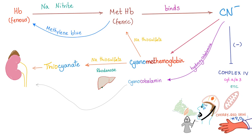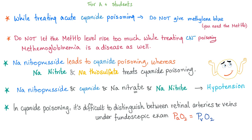Without this antidote triad, cellular respiration is inhibited and the patient ends up with bitter almond breath and cherry red skin. For advanced students: do NOT give methylene blue during acute cyanide poisoning treatment, because it will convert the methemoglobin we currently need back into regular hemoglobin. Wait until cyanide is cleared from the system, then give methylene blue. Also, do not let methemoglobin rise too much — excessive methemoglobin causes methemoglobinemia, which is also dangerous.